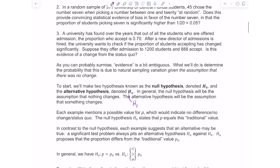In general, the null hypothesis will be the assumption that nothing changes. It's the status quo. The alternative hypothesis will be the assumption that something changes. Each example mentions a possible value for P, which would indicate no difference, no change, or the status quo. The null hypothesis states that P equals that traditional value.